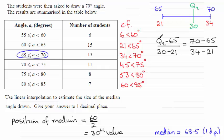So all we need to do is just simplify this. And you've got Q2 minus 65, all divided by 30 minus 21, which is 9, equals 70 minus 65, which is 5, and 34 minus 21, which is 13.